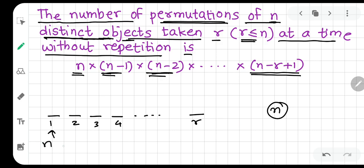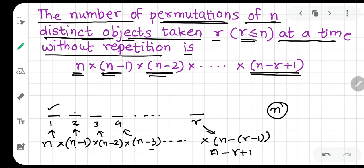In the first place, you can arrange in n ways. In the second place, n-1 ways because repetition is not allowed. The first is there, so this will not be here. Third is n-2, fourth is n-3, and it will continue. The rth place becomes (n-r+1).